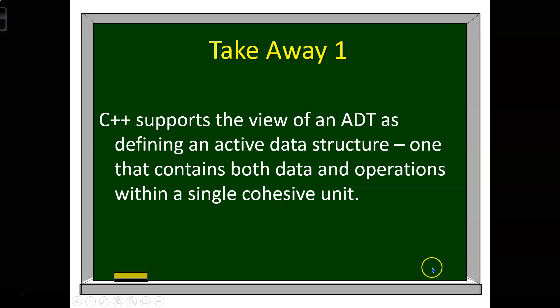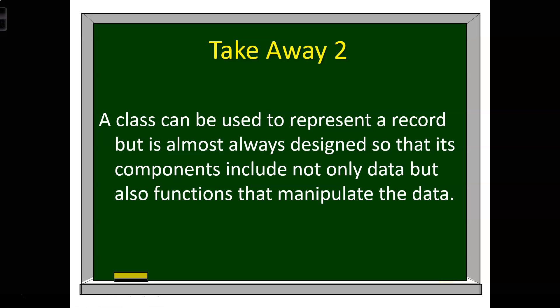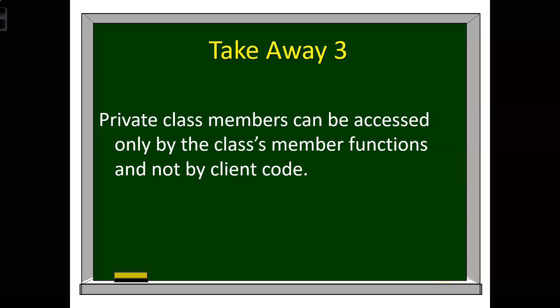Our takeaways for today: C++ supports the view of an ADT as defining an active data structure — one that contains both data and operations within a single cohesive unit. A class can be used to represent a record but is almost always designed so its components include not only data but also functions that manipulate the data, with data hiding preventing other parts of the program from accidentally changing values. Private class members can be accessed only by the class member functions and not by client code — any code that's outside of the class. That's it for this lesson; happy programming.